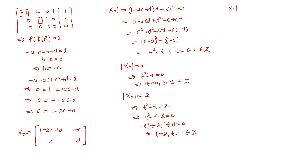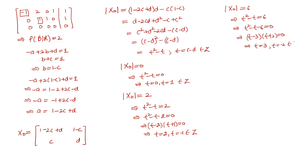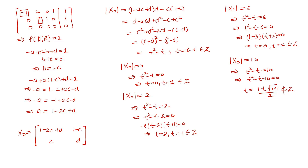For option 3, det(x0) = 6 implies T² - T - 6 = 0, giving (T-3)(T+2) = 0, so T = 3 or T = -2, both integers. So det(x0) can be 6. For option 4, det(x0) = 10 implies T² - T - 10 = 0. Solving gives T = (1 ± √41) / 2, which does not belong to Z. Therefore det(x0) cannot be 10.